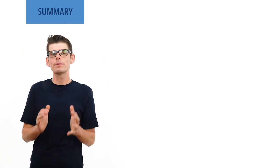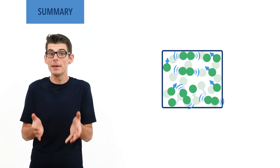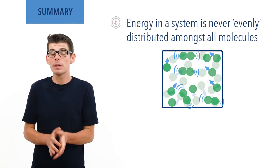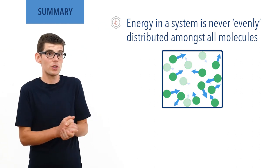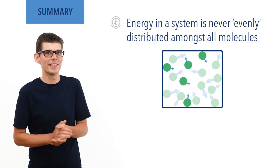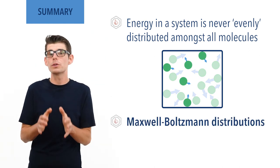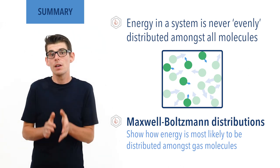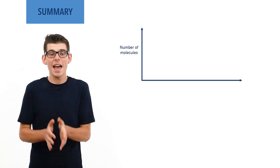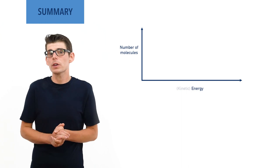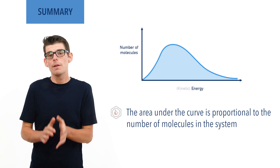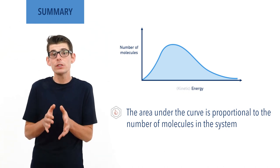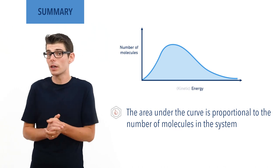To summarize: gas molecules are constantly colliding and changing speeds, meaning the energy within a system won't ever be evenly distributed amongst the molecules within it. At any one moment in time, some molecules will be moving faster and have more energy, and some will be moving slower and have less energy. Maxwell-Boltzmann distribution curves are used to show how the energy in a system of ideal gas molecules is most likely to be distributed at any one moment in time. The y-axis is based on the number or proportion of molecules and the x-axis energy. The area under the curve is proportional to the total number of molecules in the system. The shapes of Maxwell-Boltzmann distribution curves always look the same, and despite being based on ideal gases, the distributions calculated are very similar to those for non-ideal gases and aqueous particles.